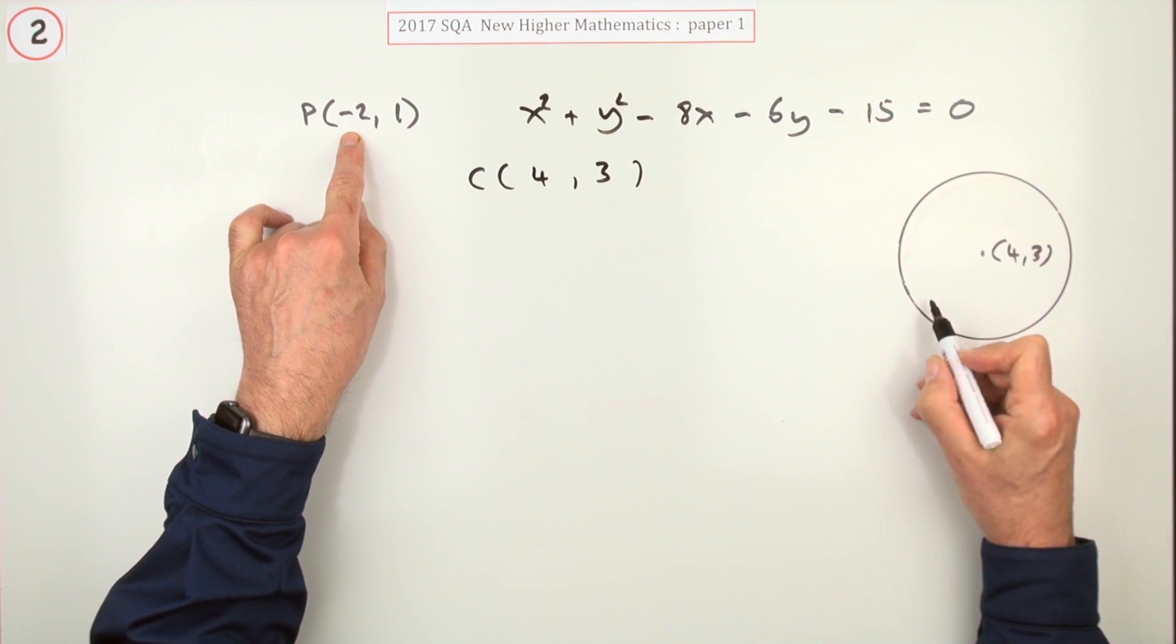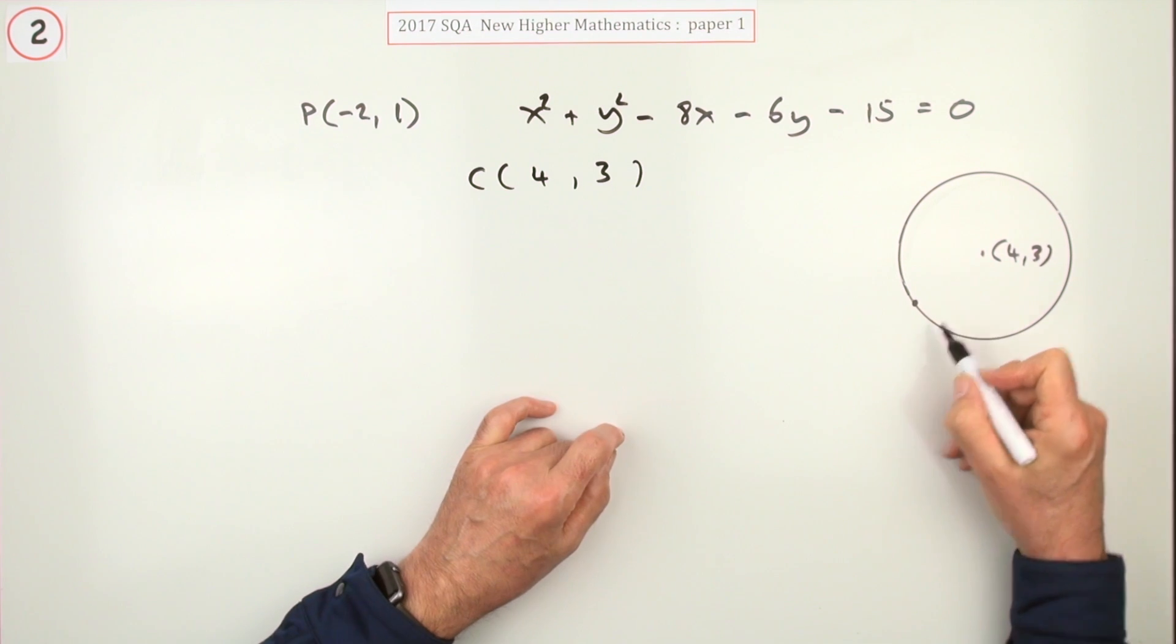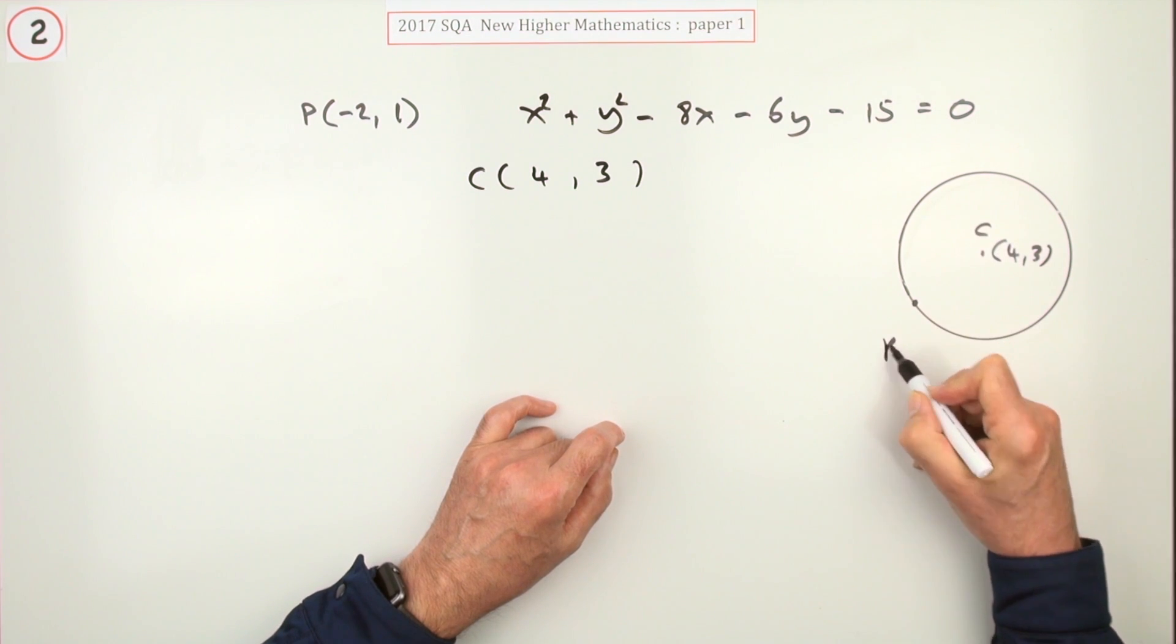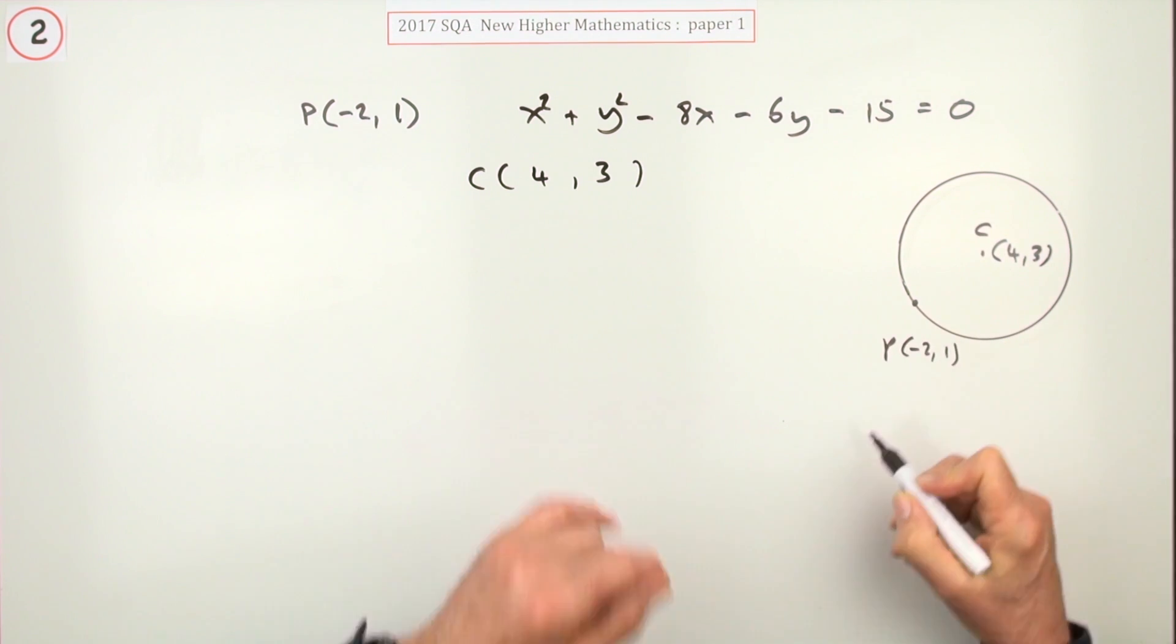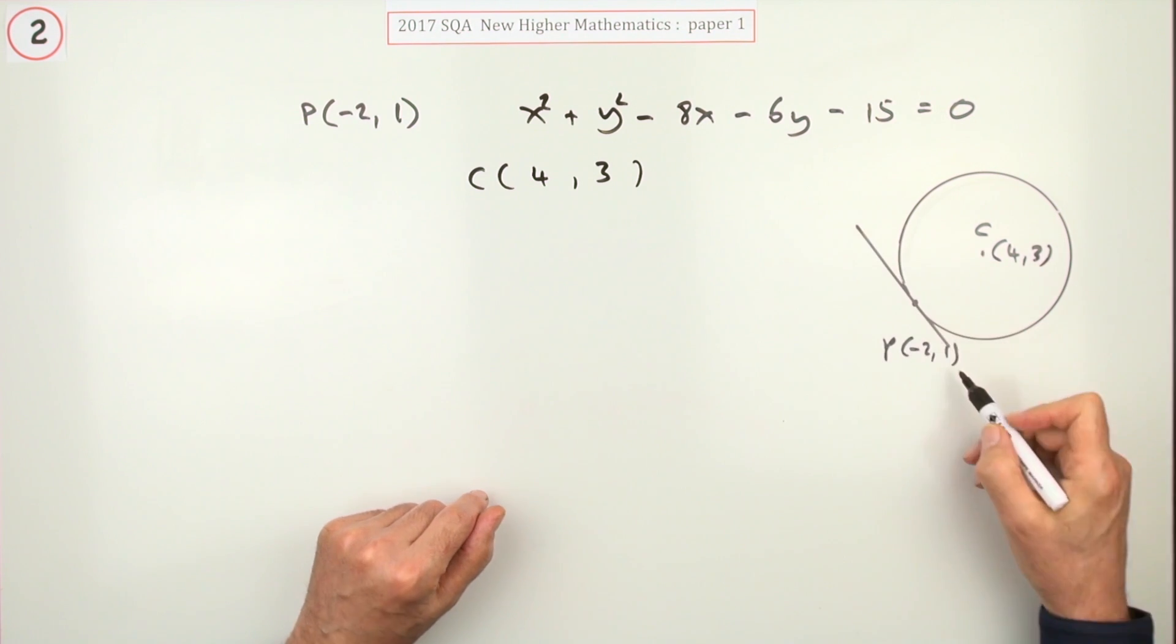So this point, which is at negative 2, 1 is down here in relation to it. There's the center. There's the point at negative 2, 1. So the tangent would look something like this.